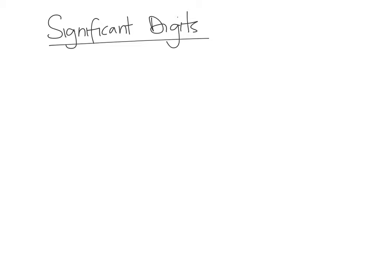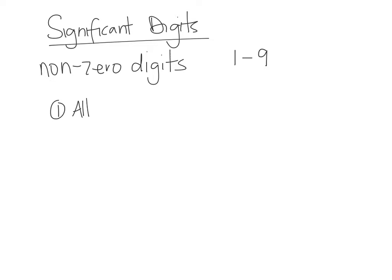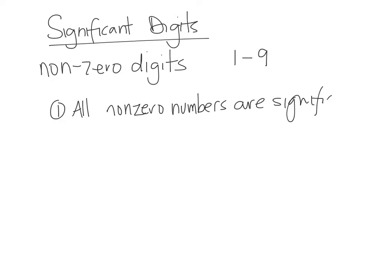Significant digits — they're used in both physics and chemistry. Non-zero digits means numbers 1 through 9. The rule is: always begin with the first non-zero digit from the left and count to the right. The first guideline: all non-zero numbers are significant — they all count.